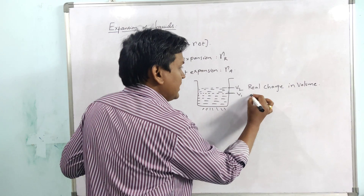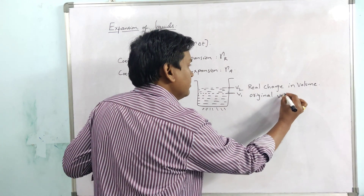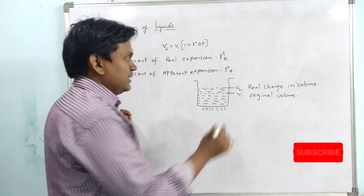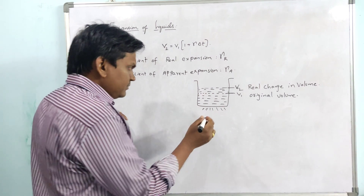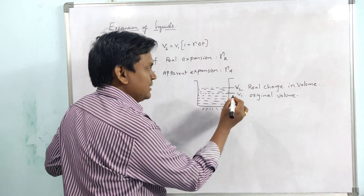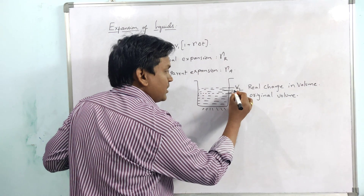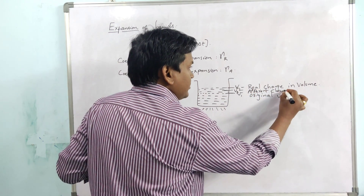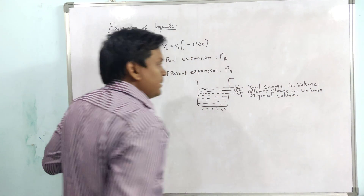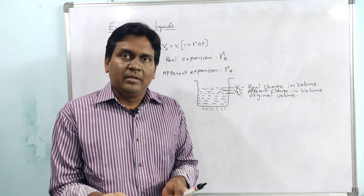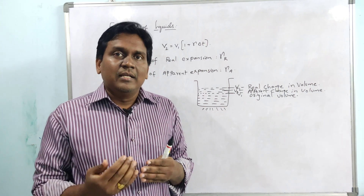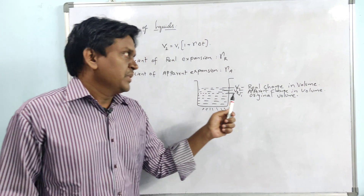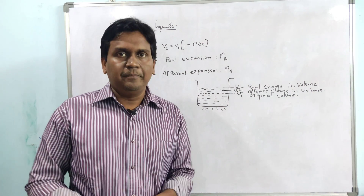The real change in volume is the change that occurs when the vessel is not expanding. Now if we consider that the vessel also expands, then the observed volume becomes V3, and this is the apparent change in volume. Apparent means what appears to us — the volume that appears to us is the apparent change, while the volume that actually takes place is the real change in volume.